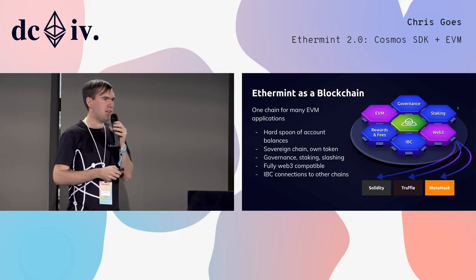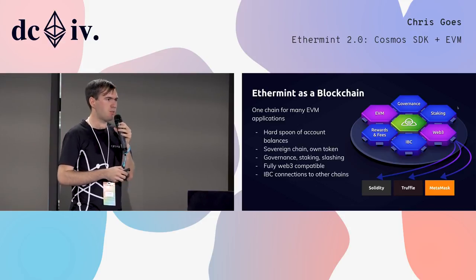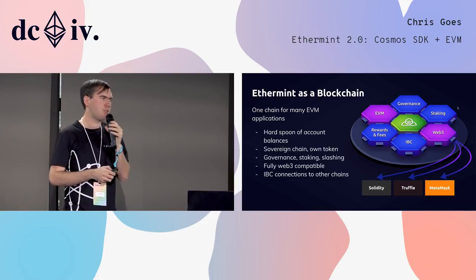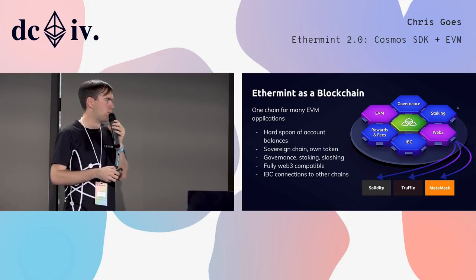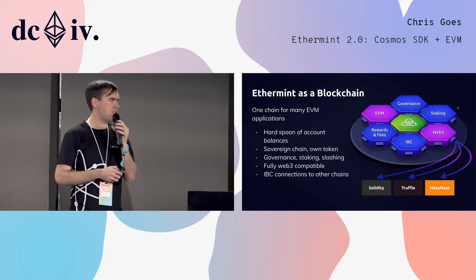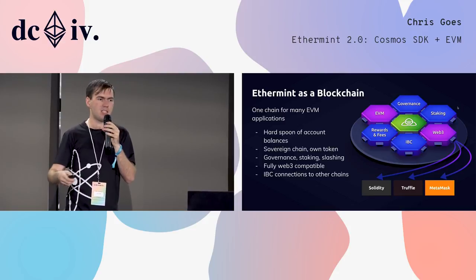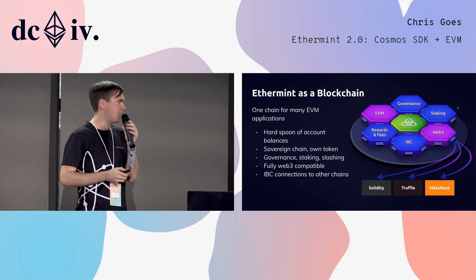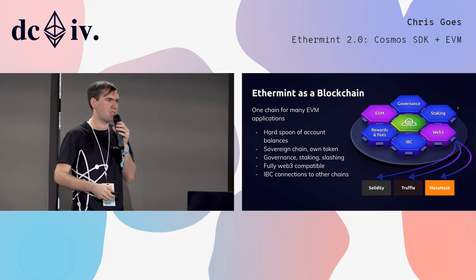Ethermint is a blockchain designed to be, like Ethereum, one chain for many EVM applications at once. With hard spoon account balances, users can start out with tokens to start using the chain. Ethermint will be a sovereign chain — having photons, you don't need anything other than photons in order to use Ethermint. It will also have the governance, staking, and slashing modules from the Cosmos SDK using Tendermint consensus. It will be fully Web3 compatible, so you can use Truffle, MetaMask, Solidity, all your existing tooling — just change a dropdown slider on MetaMask and connect to Ethermint instead. And it will have IBC connections to the Cosmos Hub and to future zones which will inhabit the Cosmos network.